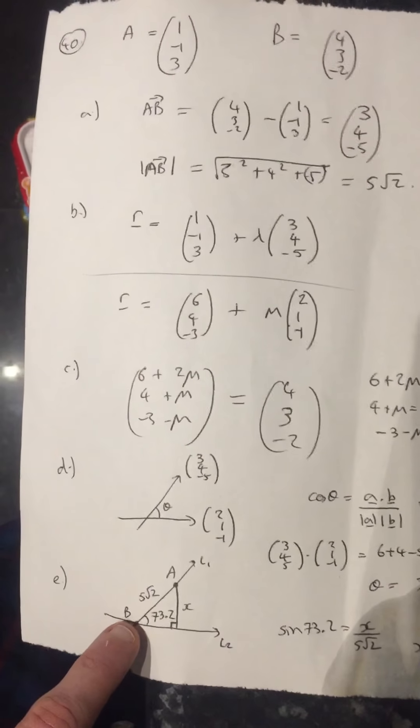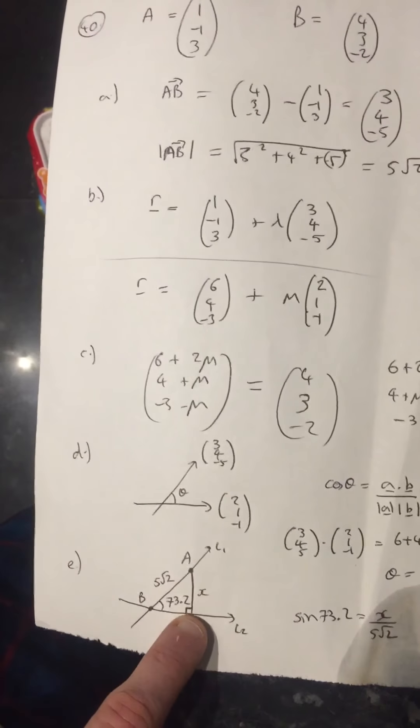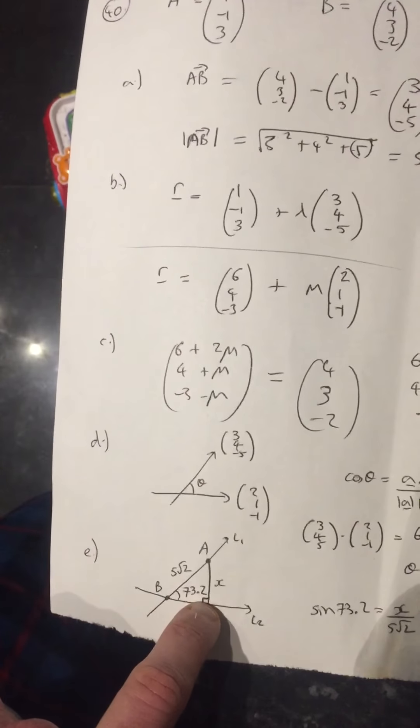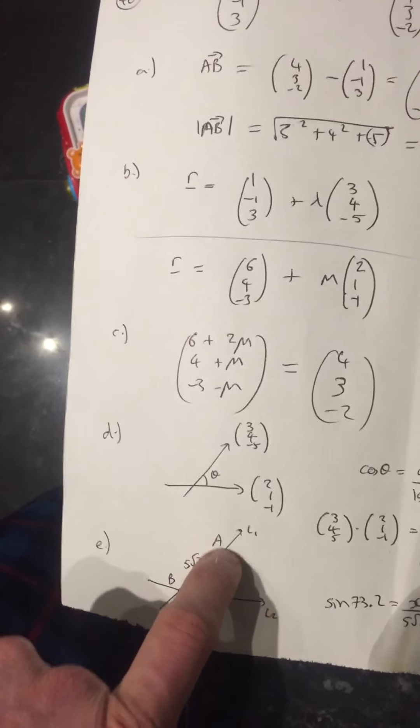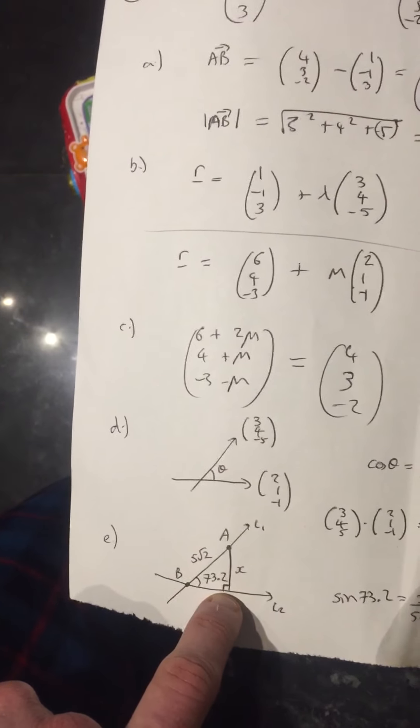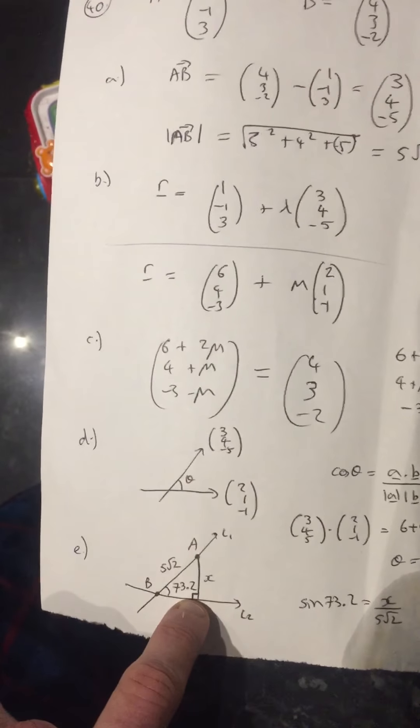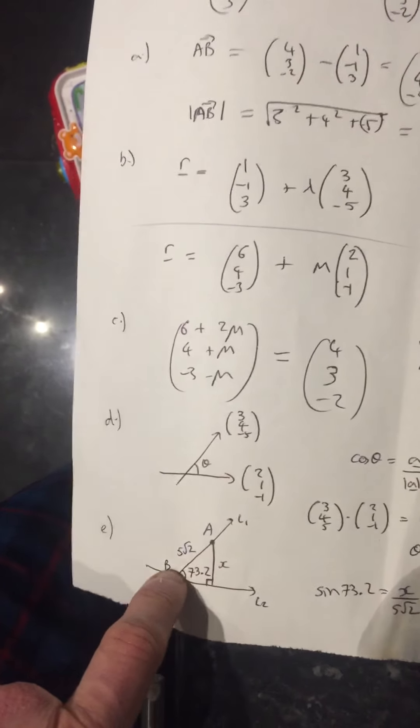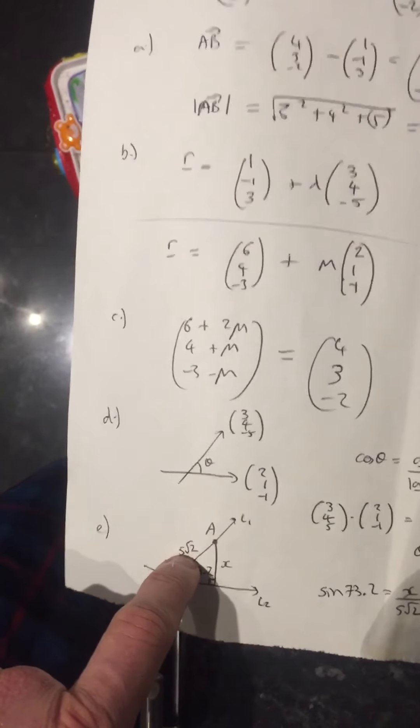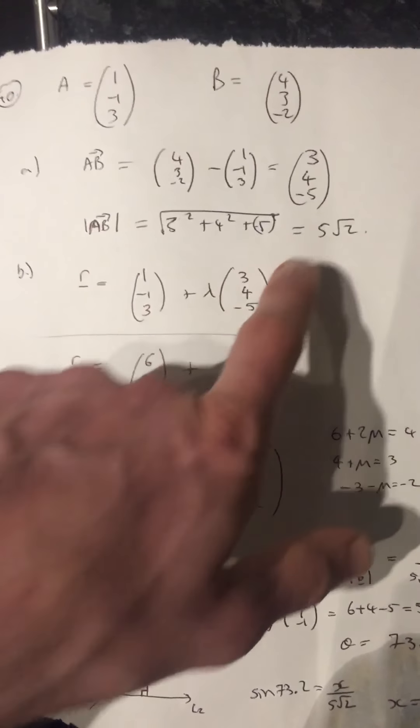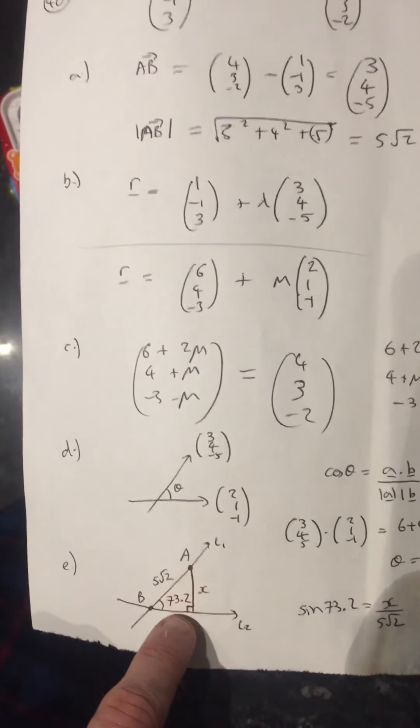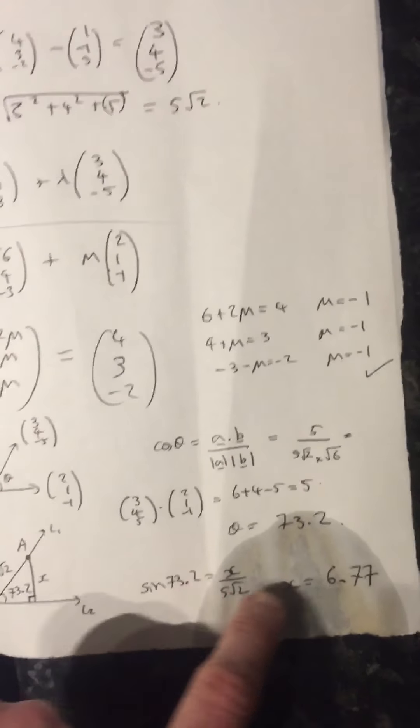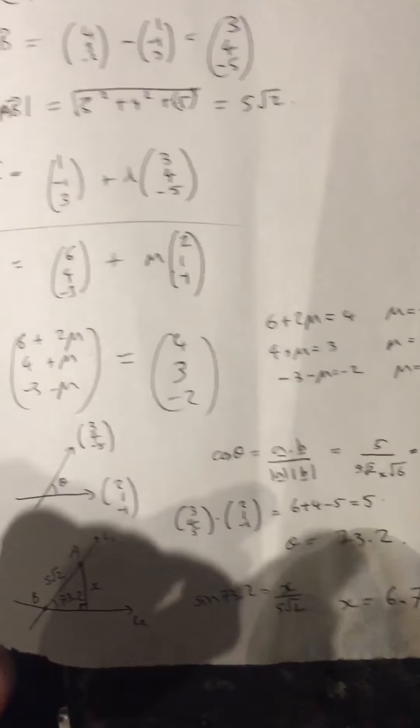And the question wanted me to work out the shortest distance from A to the line L2. I know the shortest distance is going to be when this is perpendicular. This is the shortest distance between A and the line L2. So I know I've got a right angle triangle there. I know this angle is 73.2. I know this length is 5 root 2 because I worked it out over here. And then I can just do sine 73.2 equals the opposite divided by hypotenuse. And that allows me to work out the length X.